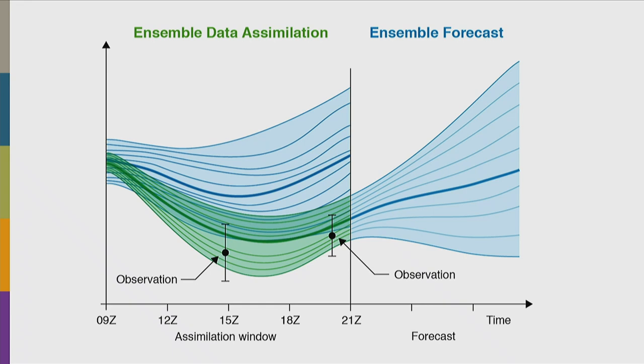All of this goes into our forecasting system and is run continuously 24 hours a day. We run this ensemble assimilation and prediction system and produce 10-day forecasts every 12 hours. For some member states we produce them every 6 hours, but they pay a bit extra for that.